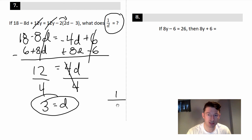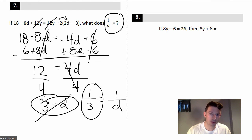So 1/d, we're just flipping both sides. That's 1/3. We flip one, we flip the other. So your final answer is one third. Just be careful.